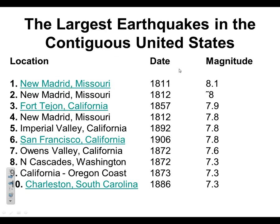Looking at the contiguous United States without Alaska, we see Missouri again, then Fort Tejan in California, then another Missouri, another California, and finally the 1906 San Francisco earthquake — a very, very bad earthquake. A lot of people choose that one for their earthquake project. Some do New Madrid, and some do the 1964 Alaskan earthquake. We also get one in the Cascades in Washington, California again, the Oregon Coast, and then one in Charleston, South Carolina. Why would there be one in South Carolina? That's exactly why we want to study earthquakes — we need to understand what's going on.